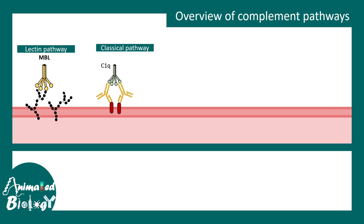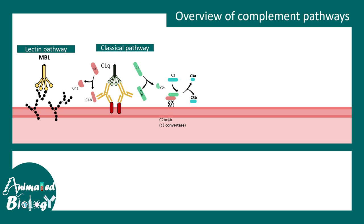The classical pathway also requires the protein known as C1Q. In the classical pathway, there are complement proteins C2 and C4, which get cleaved by the membrane complex and form C4B and C2B. All these C4B and C2B together form the enzyme known as C3 convertase. C3 convertase converts C3, as the name suggests, into C3A and C3B.